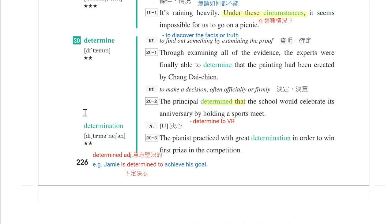Determine另一个很常见的意思是决定。例句：The principal determined that the school would celebrate its anniversary by holding a sports meet。校长决定学校会举办运动会来庆祝周年。Determine to do something，决定要做一件事情。